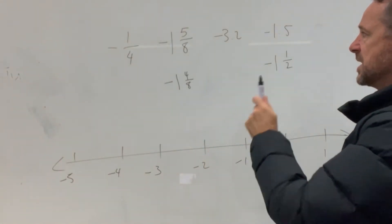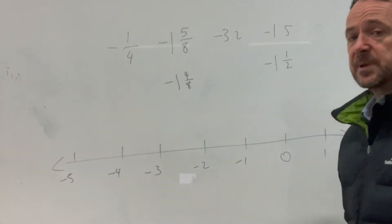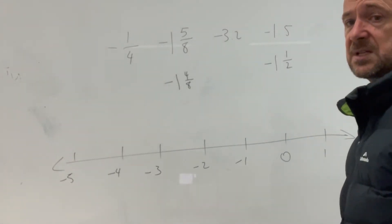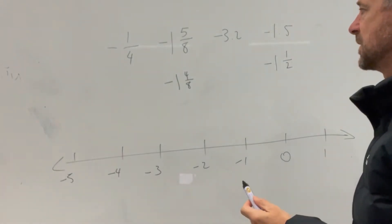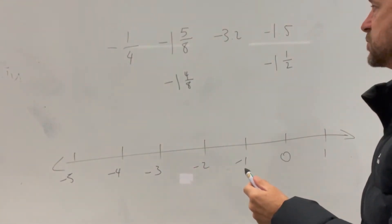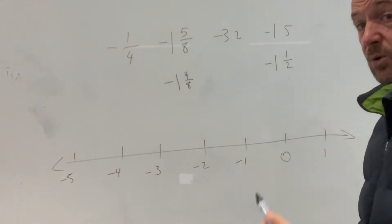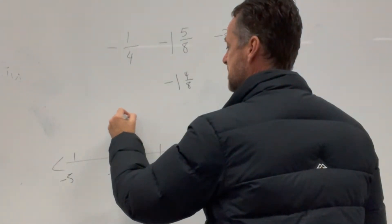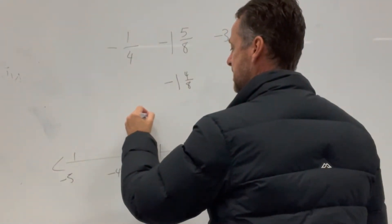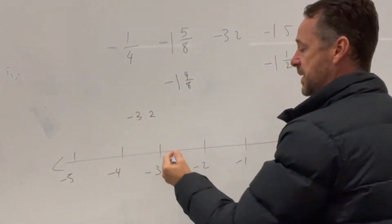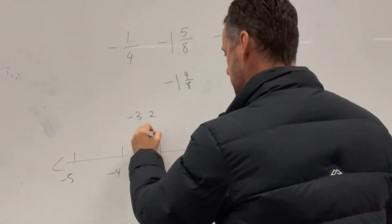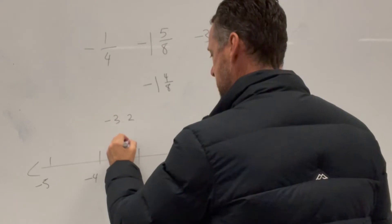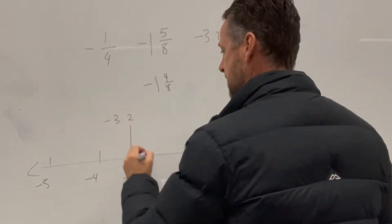We don't actually have to find common denominators for all of these — you could, but it's not necessary. So if we're looking at which one is the smallest, negative 3.12 is the smallest. That will become apparent because it will go obviously onto a number line about there — negative 3.12.